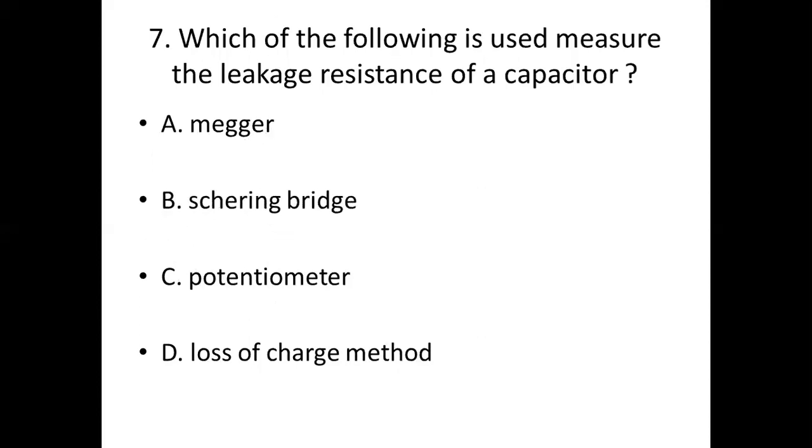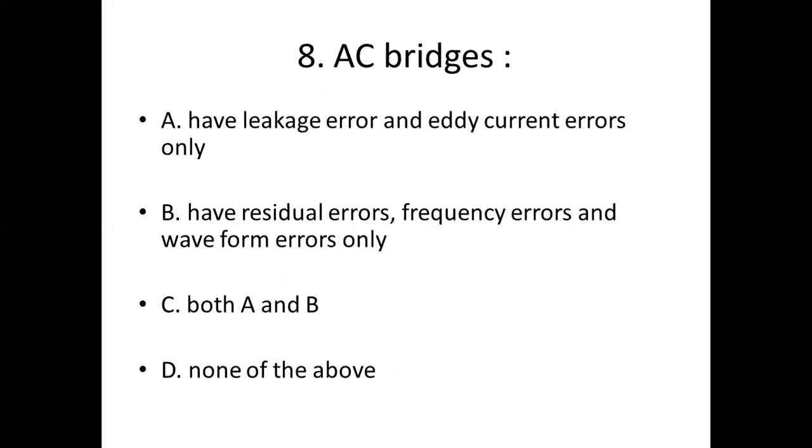Eighth bit. AC bridges: Option A, have leakage error and eddy current error only; Option B, have residual errors, frequency error, and waveform errors only; Option C, both A and B; Option D, none of the above. Answer is C, both A and B.